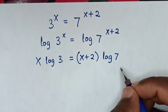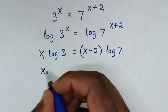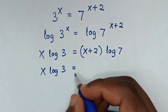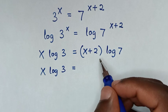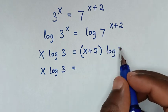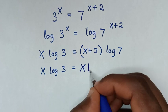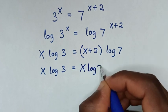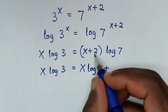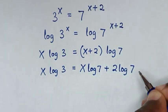Then x log of 3 is equal to we open the bracket, so we multiply: log of 7 times x gives x log of 7, then plus log of 7 times 2 gives 2 log of 7.